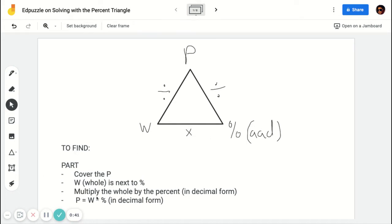So if you're looking for the part, all you have to do is you would take your whole, which should be given to you, multiply it by the percent as a decimal, and that would give you the part.